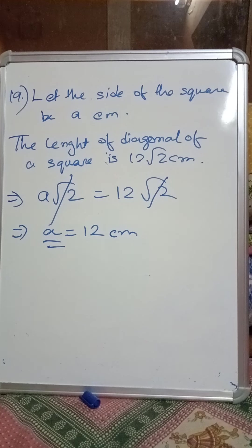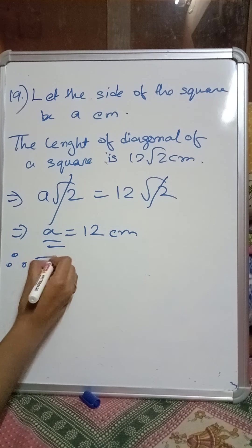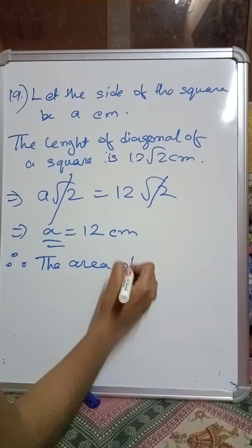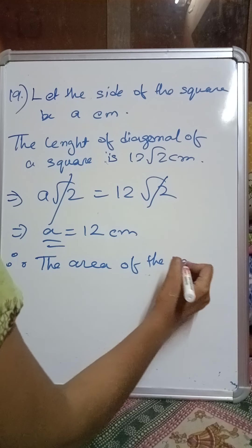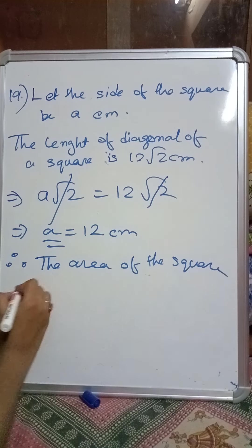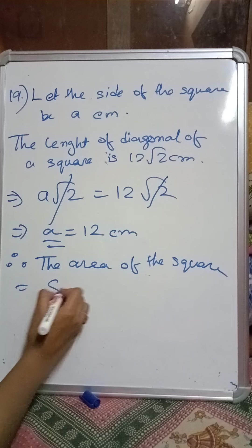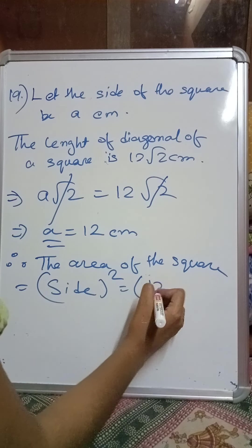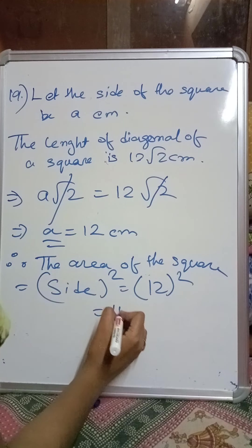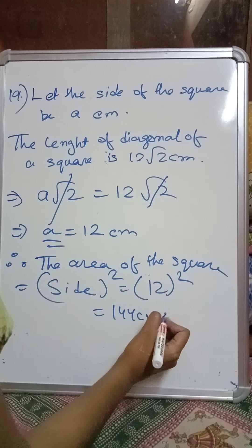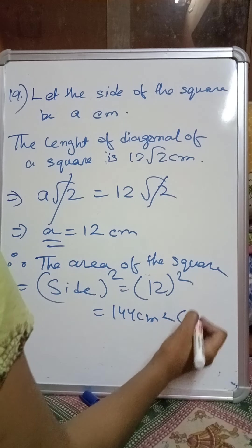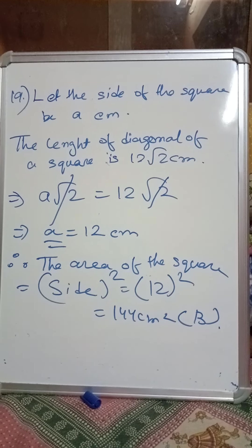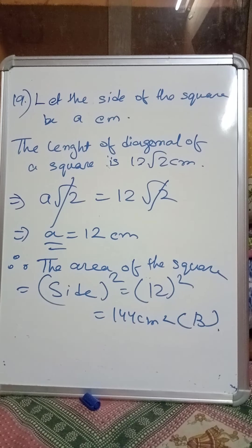Now 'a' is the side of the square. Therefore, the area of the square = side squared = 12 squared = 144 centimeter square, which is option number B in your book.